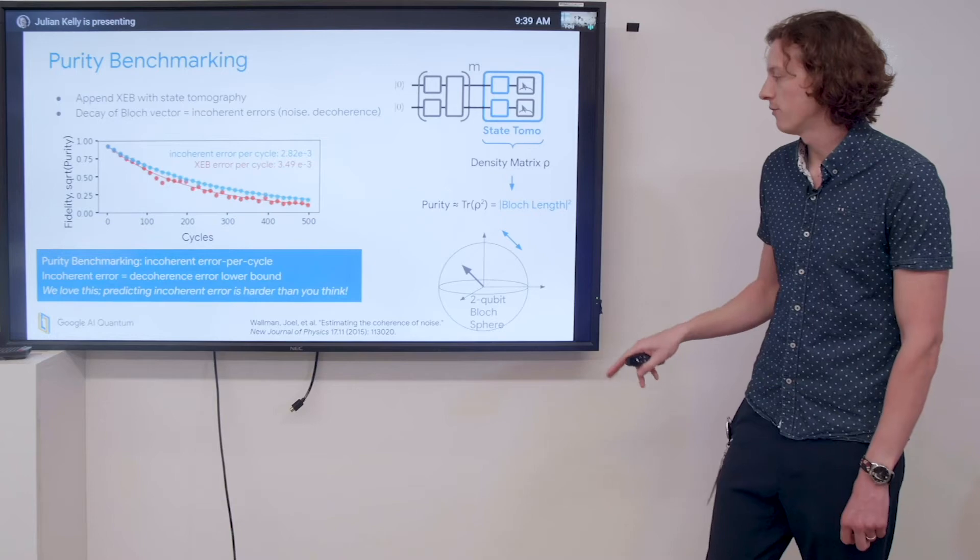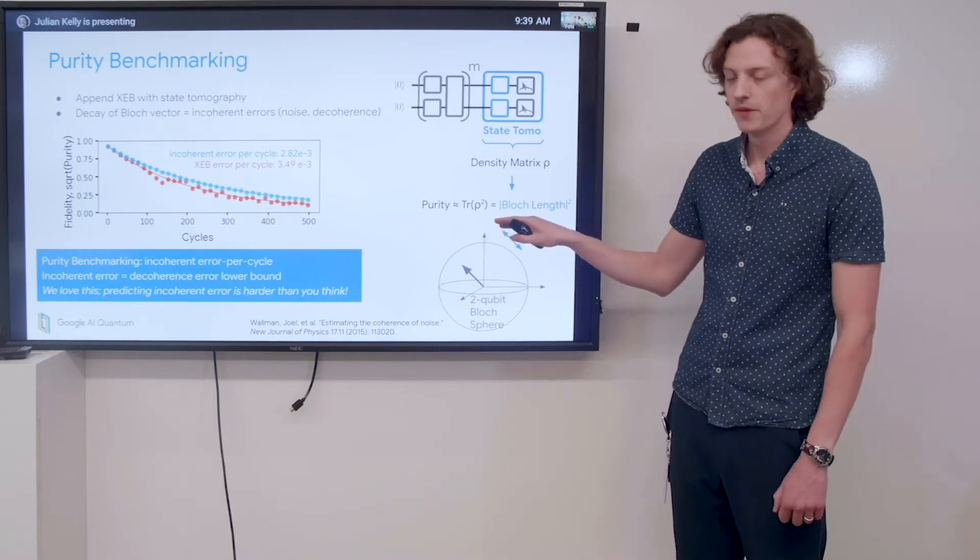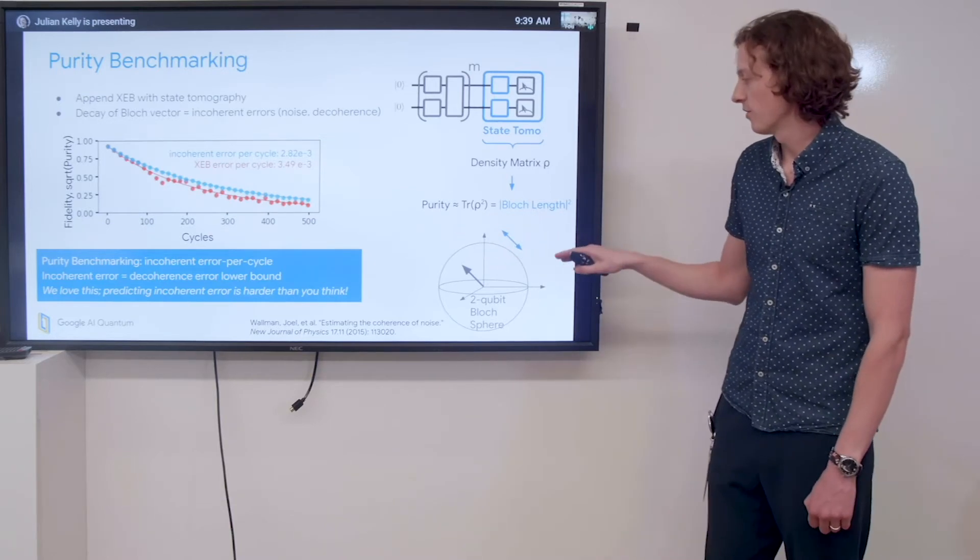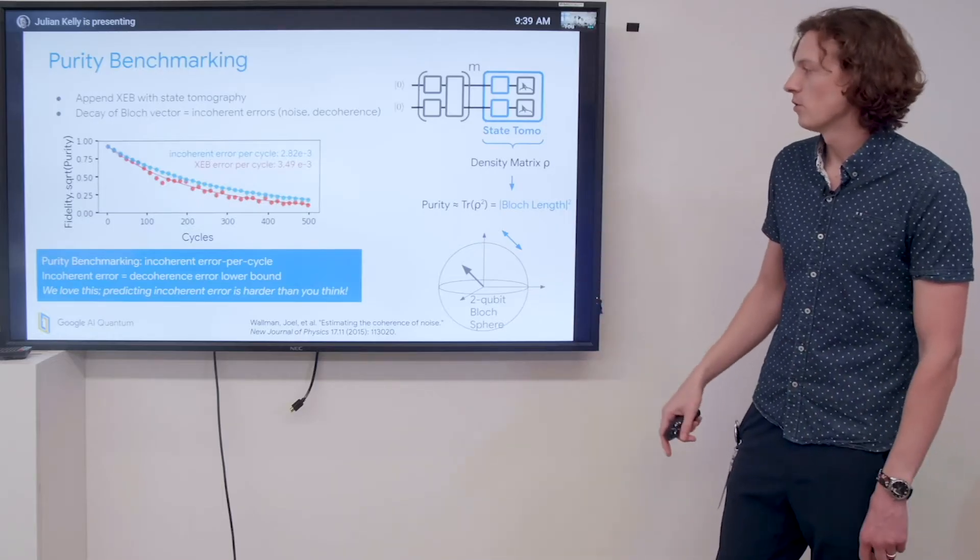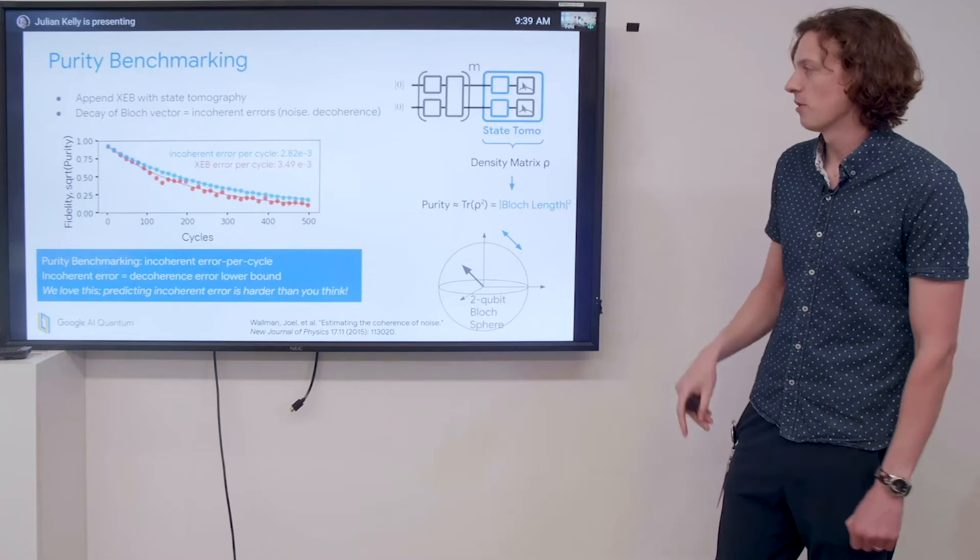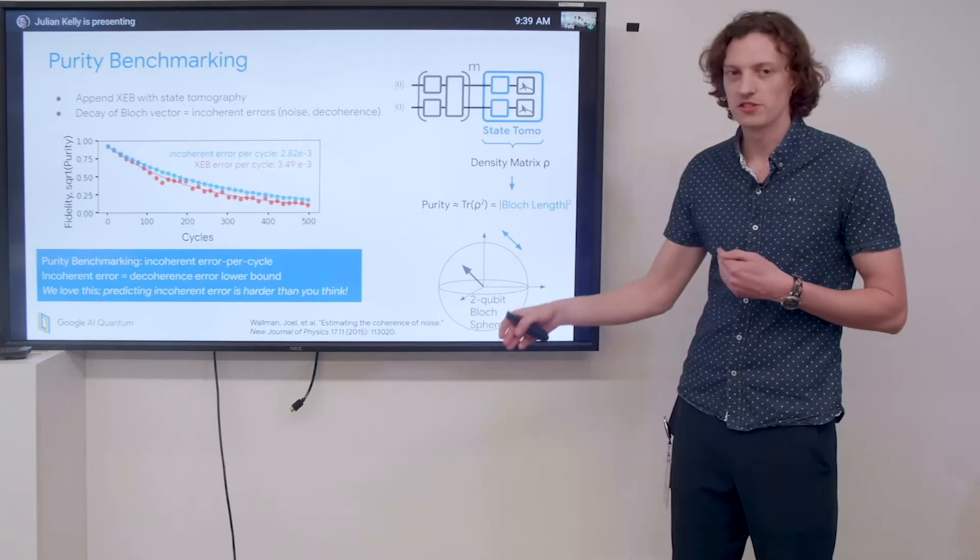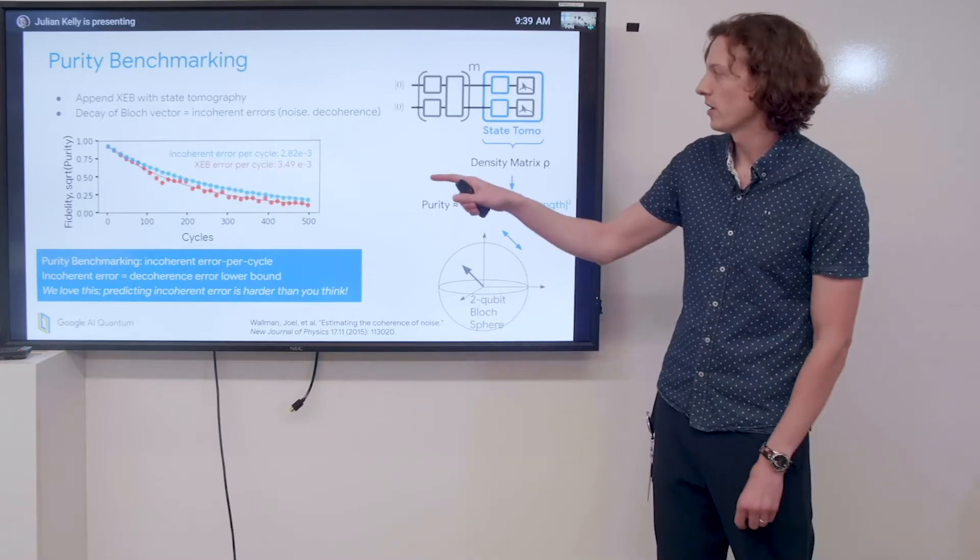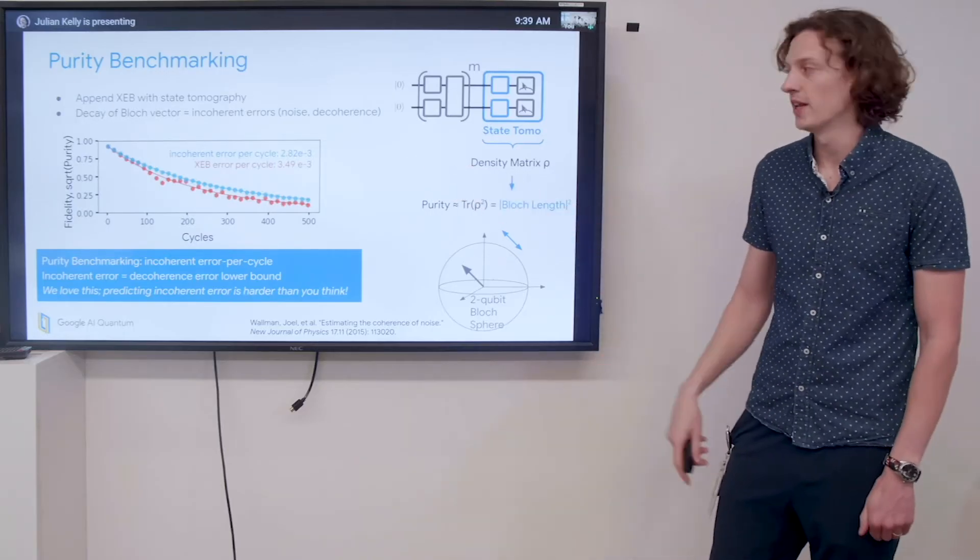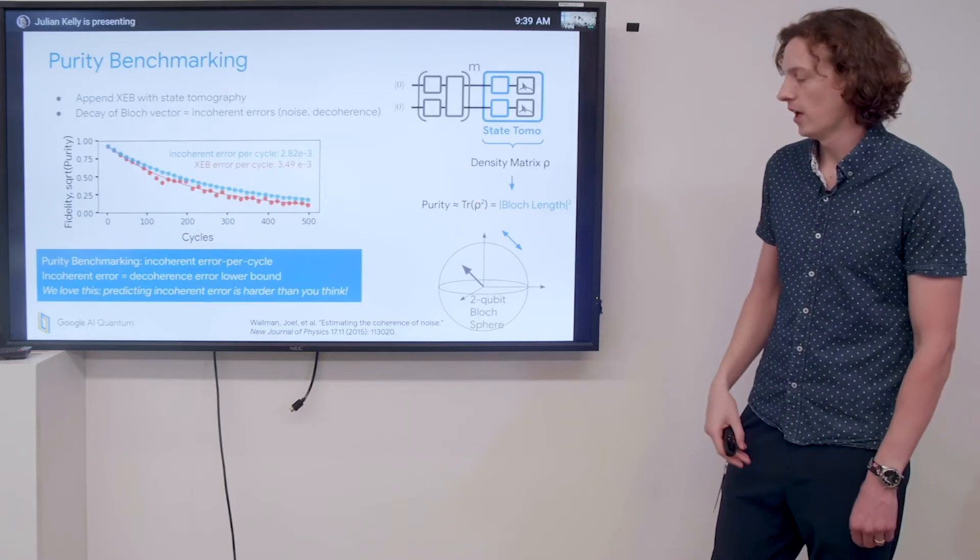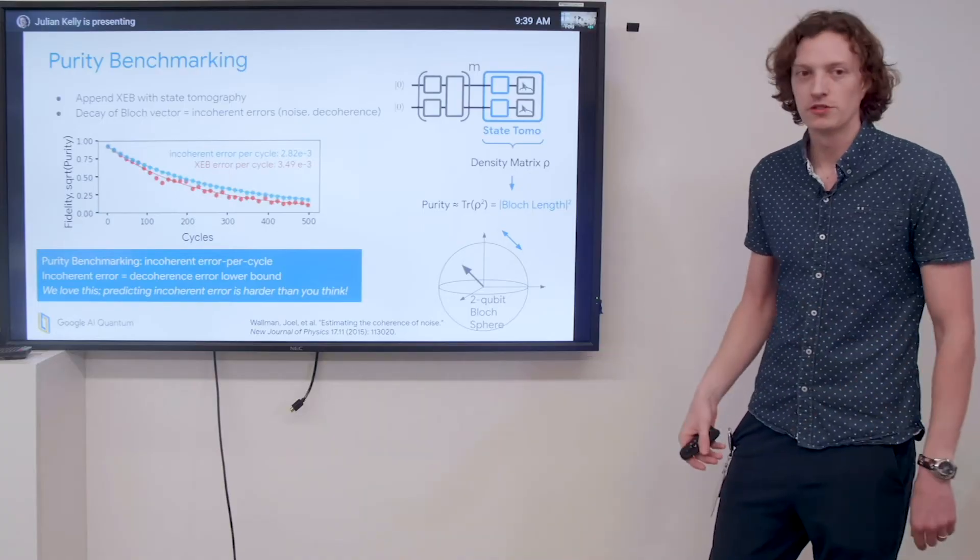We can then figure out the purity, which is more or less the trace of rho squared. You can think of this as essentially the length of the Bloch vector squared, an n-dimensional Bloch vector. If we look at the length of this Bloch vector as a function of the number of cycles in the sequence, we can look at the decay of it, and that tells us something about incoherent errors we're adding to the system. The Bloch vector will shrink if we have noise or decoherence.